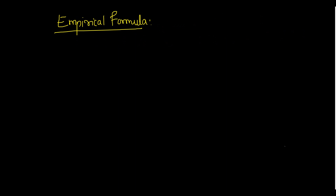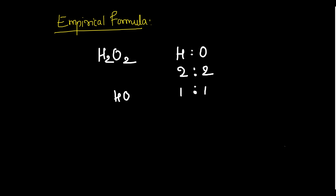Next: empirical formula. Take hydrogen peroxide H₂O₂ as an example — this is the actual molecular formula. The combining atoms are hydrogen and oxygen in ratio 2:2. If you simplify to the smallest ratio, 2:2 becomes 1:1, giving formula HO. HO is the empirical formula. The actual ratio gives the molecular formula; the simplest ratio gives the empirical formula.